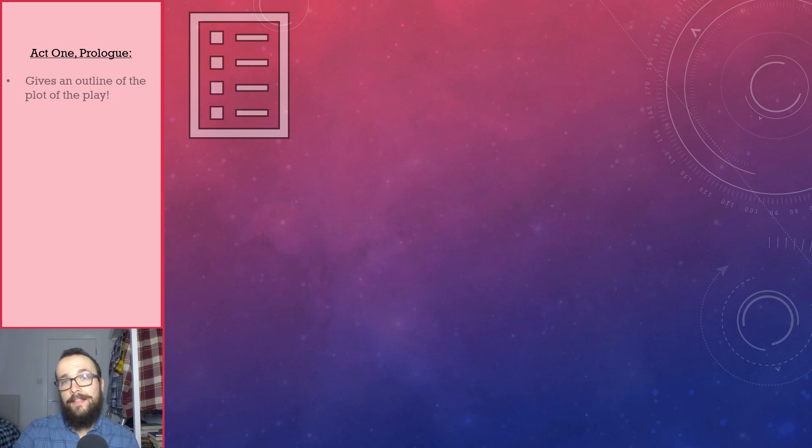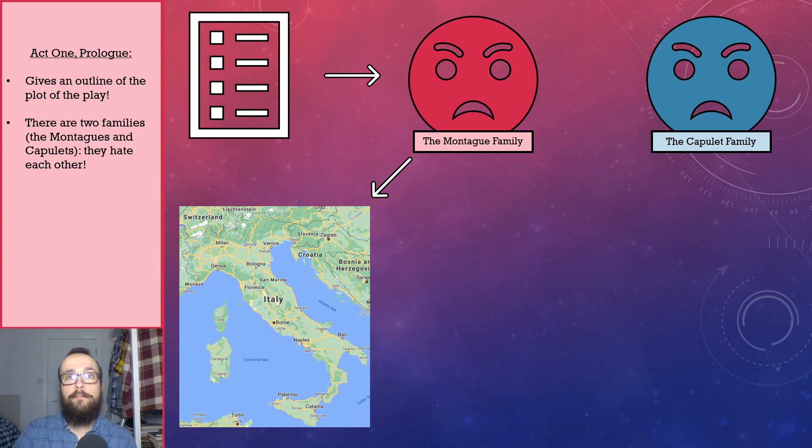Act 1 of Romeo and Juliet begins with a prologue. Broadly speaking, this prologue gives an outline of Romeo and Juliet's plot. It makes some really key information clear right at the very beginning of the play, meaning that the audience are going to be well aware of what's about to happen. For instance, the prologue reveals that the play is about two families, who we later find out are called the Montagues and Capulets. They live in the city-state of Verona, which is in Italy.